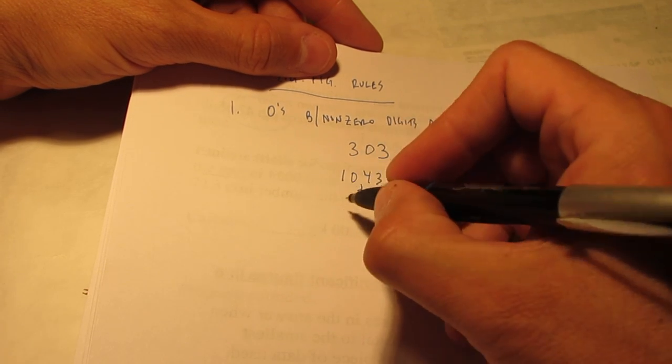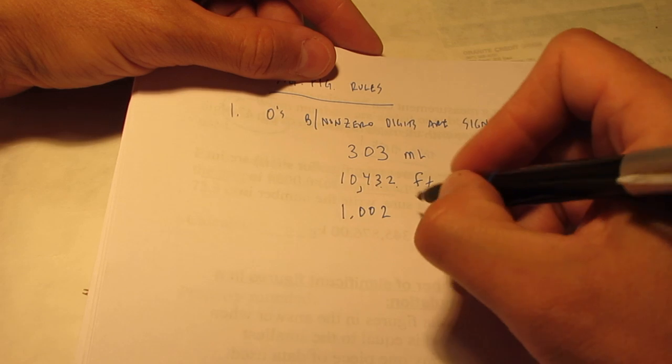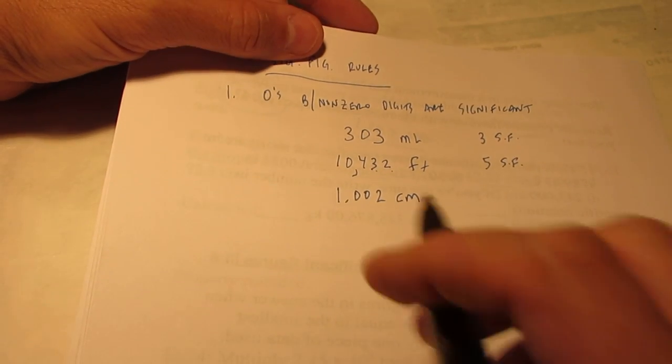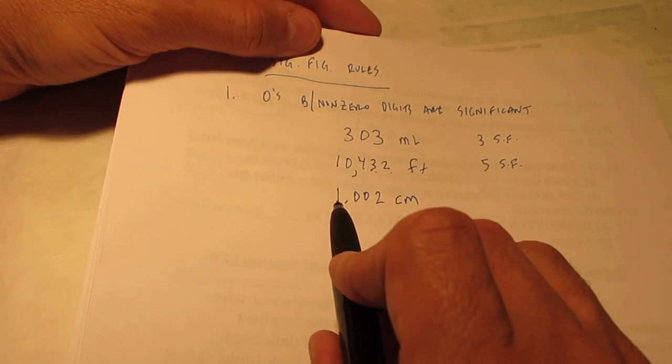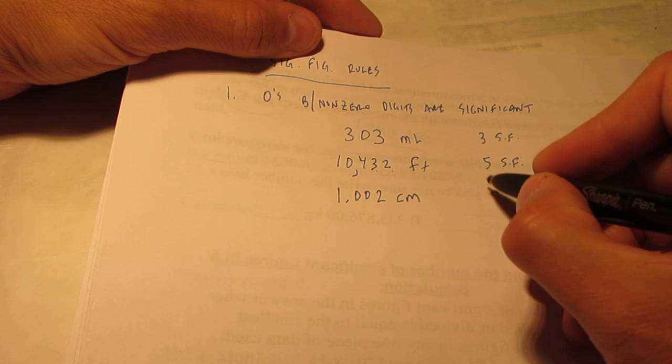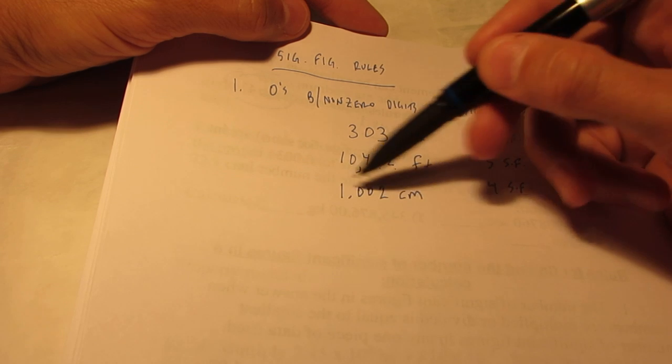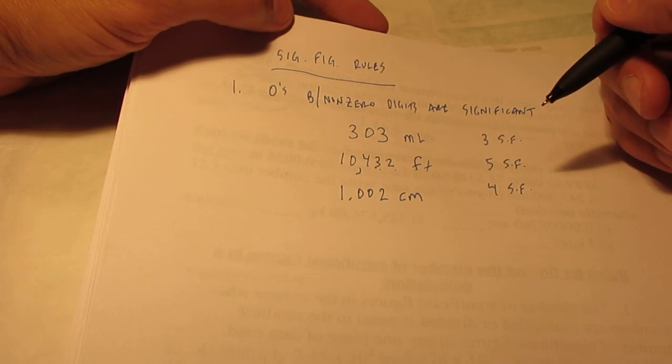If I had 10,432 feet as my measurement, I would have one, two, three, four, five significant figures. So, zeros between non-zero digits are significant. Let me do one more for you. If I had 1.002, and let's call this centimeters, these zeros are between non-zero digits, so they are significant. I would have one, two, three, four significant figures. Now, please just don't think that we're going to count how many digits there are in a measurement, and voila, that's the number of SIGFIGs. It's a little bit more complicated than that.